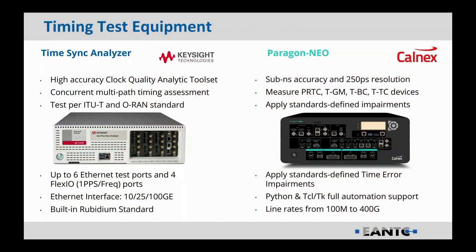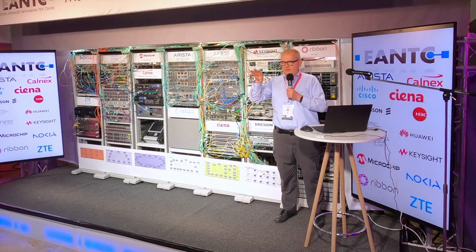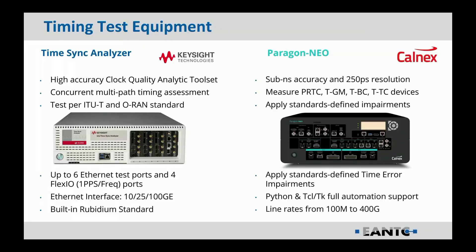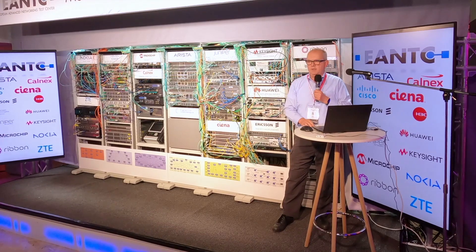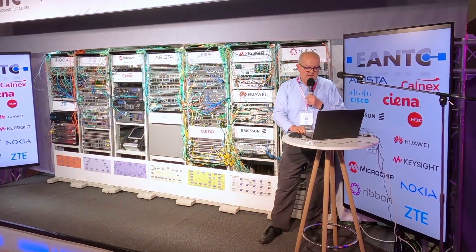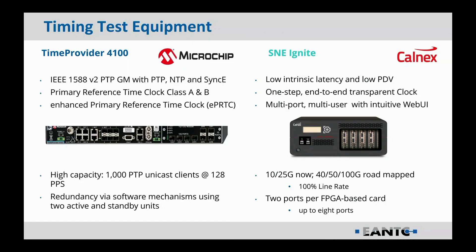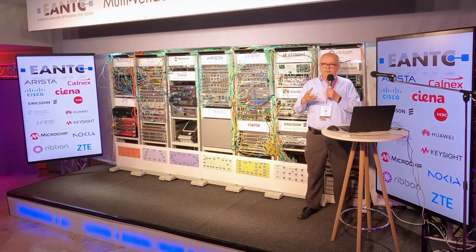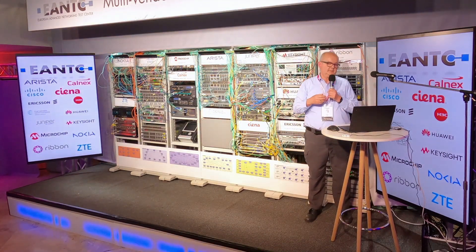The first thing we have is the time sync analyzer from Keysight, which is being used as the grand master and also as a device to measure the time error between the various clocks in the network. We also have a Paragon Neo, which is being used to measure the relative time offset between two nodes in the network. We also have a time provider from Microchip that's been used as a primary reference time clock — it's taking a simulated GNSS signal and producing a 10 MHz frequency and a time of day used by the grand masters.